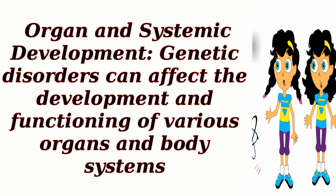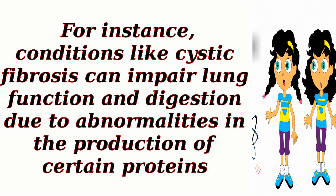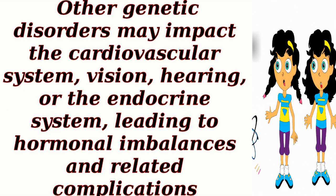Organ and systemic development: Genetic disorders can affect the development and functioning of various organs and body systems. For instance, conditions like cystic fibrosis can impair lung function and digestion due to abnormalities in the production of certain proteins. Other genetic disorders may impact the cardiovascular system, vision, hearing, or the endocrine system, leading to hormonal imbalances and related complications.